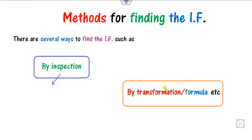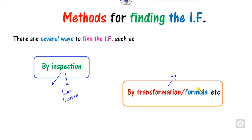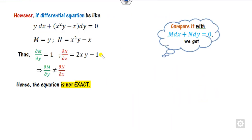We have seen there are two ways to find the integrating factor. The first one is the method of inspection. The second one is by using transformation or some formula — this was discussed in our last class. But what will happen when we work on this formula? Whenever you are trying to prove this is not exact, what you can do is take the subtraction either one way or the other.